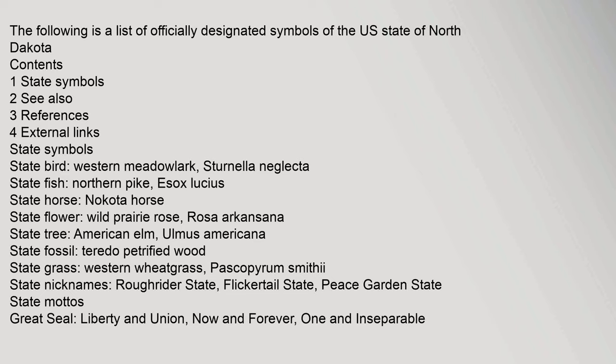The following is a list of officially designated symbols of the U.S. state of North Dakota. Contents: 1. State symbols. 2. See also. 3. References. 4. External links. State symbols — State bird: western meadowlark, Sturnella neglecta.